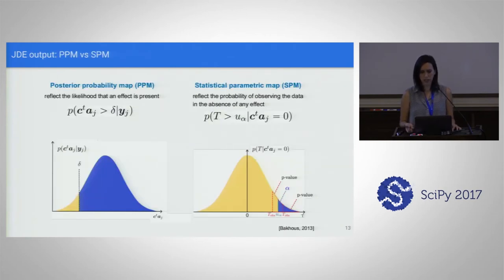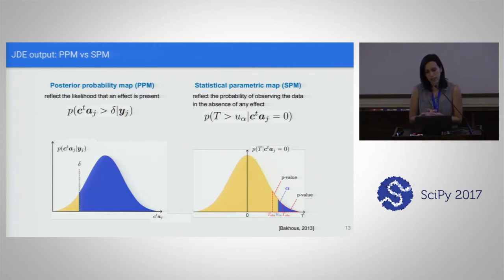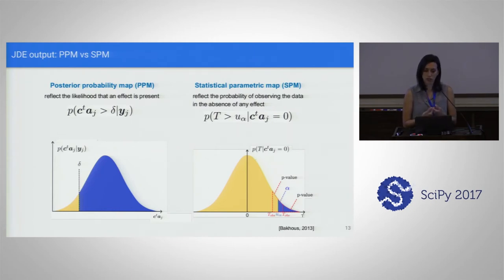Since we get outputs that are probability distributions, we can obtain posterior probability maps that reflect the likelihood that an effect is present. This is as opposed to the statistical parametric maps delivered by GLM, which reflect the probability of observing the data in the absence of any effect.